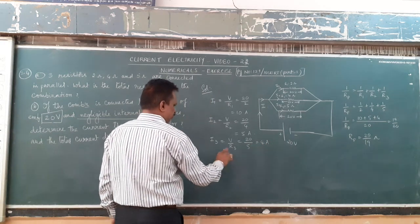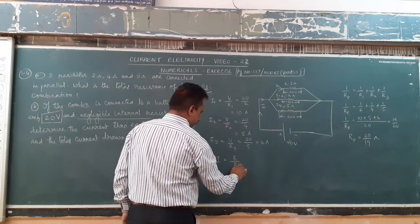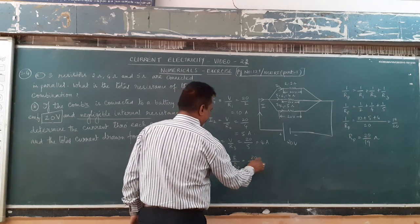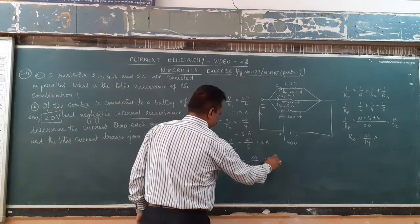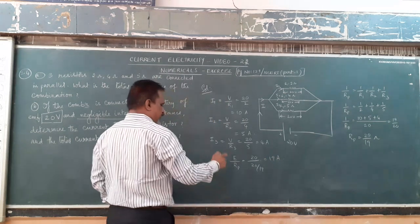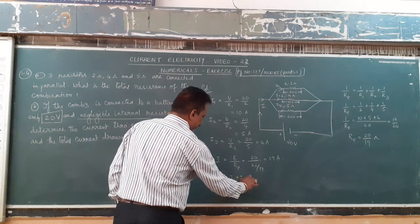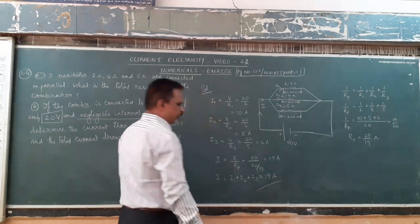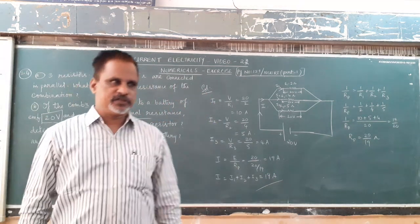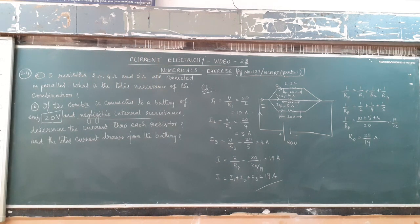The total current is EMF divided by effective resistance. EMF is 20, and effective resistance is 20/19. So total current is 19 ampere. The total current is 19 ampere.